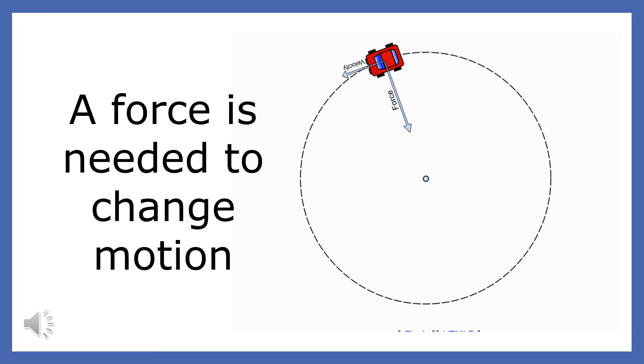A force is needed to change motion. If the road this car was traveling on was smooth ice, there would be no way that the car could travel in a circle.